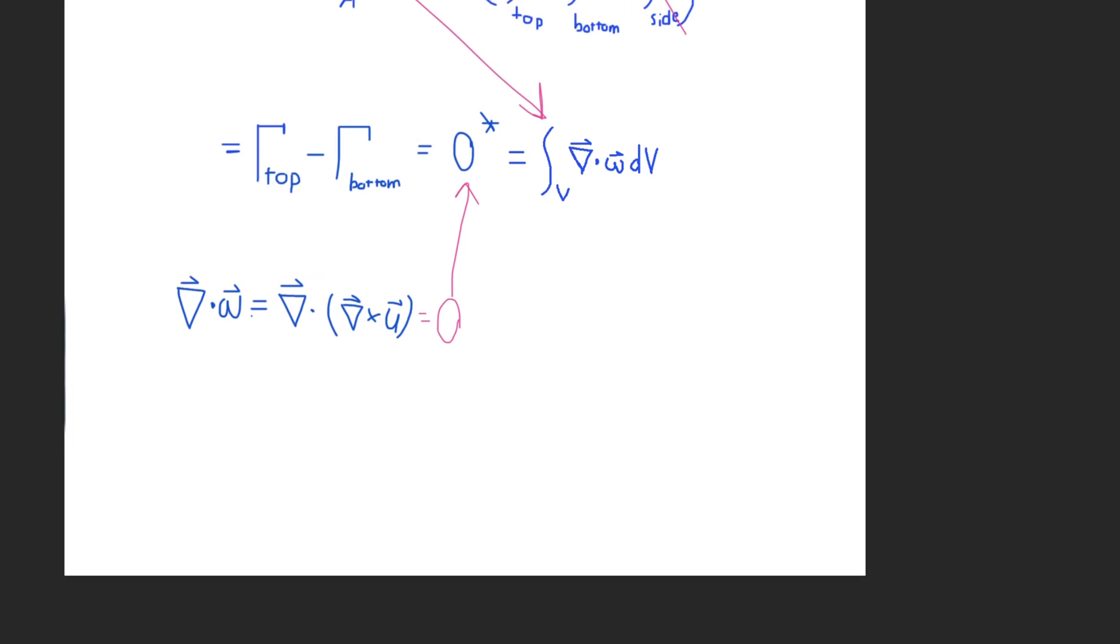And that turns out to be true everywhere. So the strength of the vortex tube is the same everywhere, which implies then that vortex lines cannot end within a fluid, although they can form loops and they can end at solid boundaries.